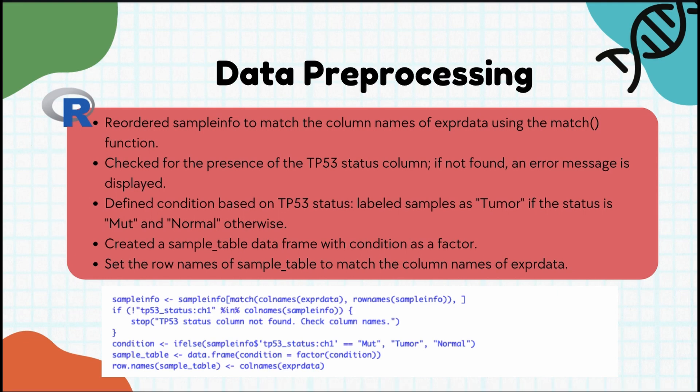Now that we have our data, let's dive into data pre-processing — this step is crucial for ensuring the data is ready for analysis. We'll focus on the following tasks: filtering out low-quality data to ensure we're working with the best possible data, normalizing expression values to correct for systematic biases, handling missing values to avoid issues during analysis, and structuring the data properly so we can run the analysis correctly.